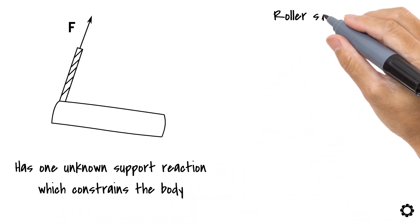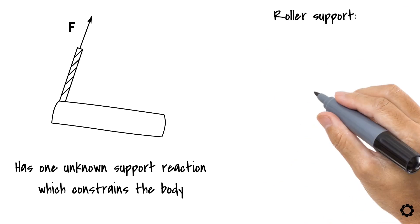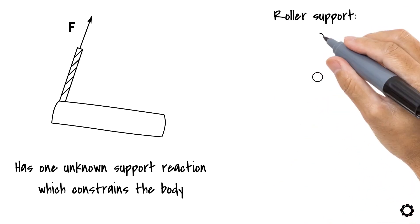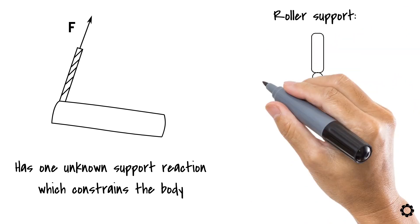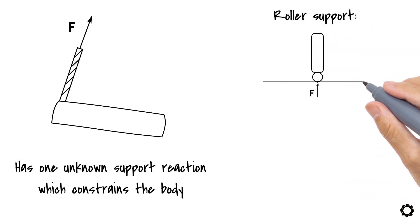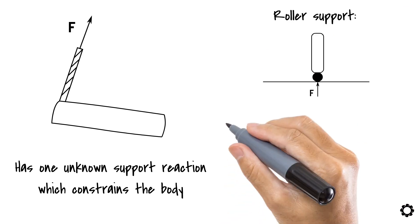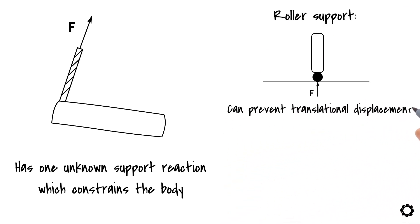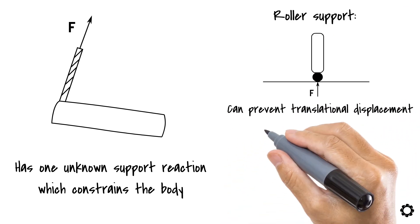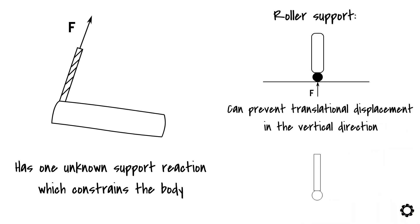Let's move on to the roller support. The roller has one unknown support reaction force which is perpendicular to the surface at the point of contact. This means the roller can prevent translational displacement in the vertical direction, but not in the horizontal direction. The roller support also does not prevent rotational displacement from happening.